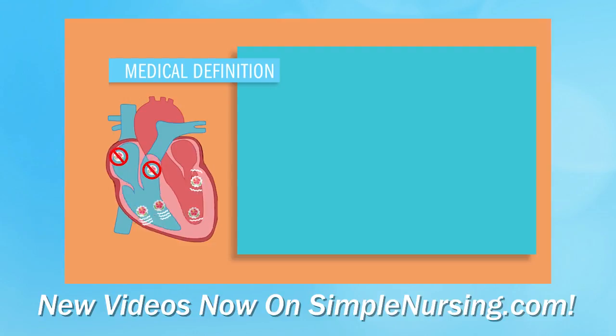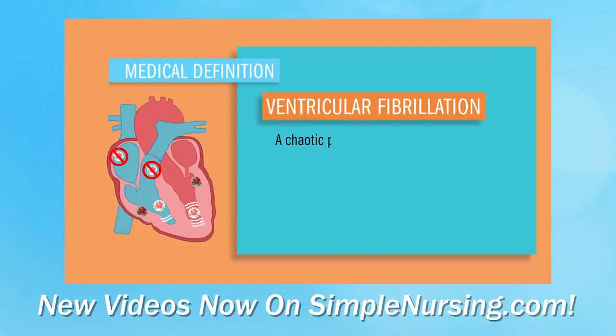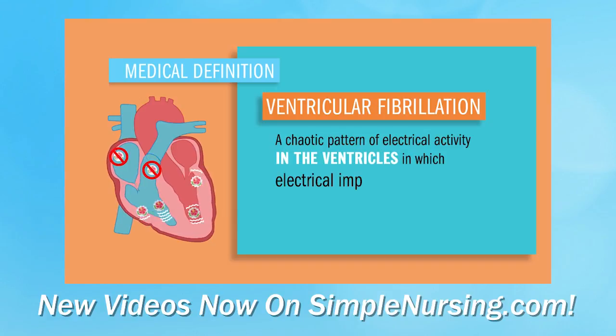So, what is V-Fib? Well, ventricular fibrillation is a chaotic pattern of electrical activity in the ventricles in which electrical impulses arise from many different foci.